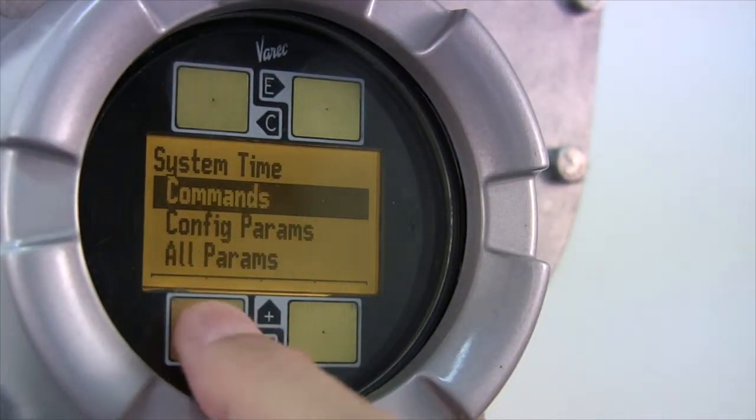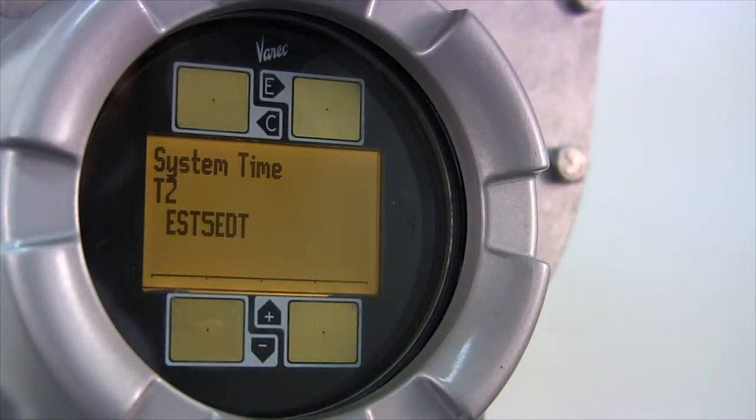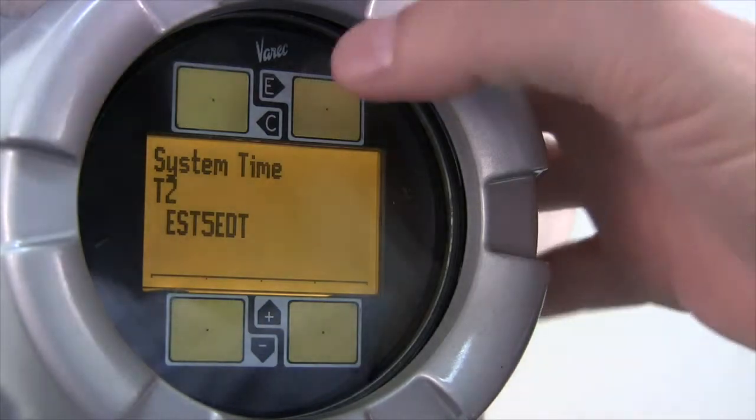Next, use the minus button to move to config params and then press E to open. Scroll to TZ for time zone and press E to open.